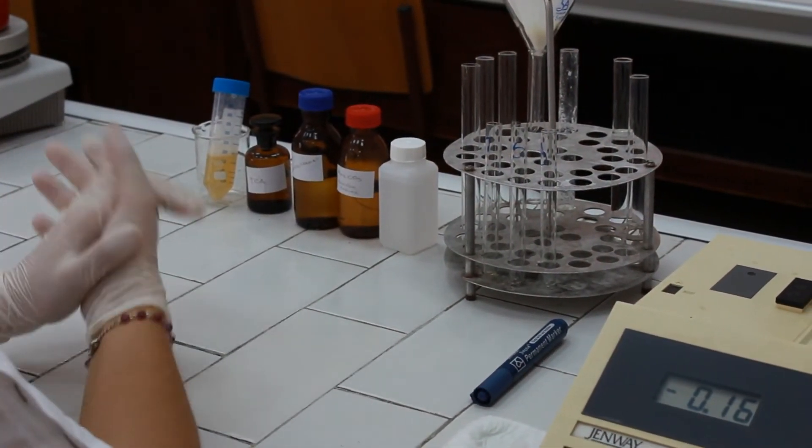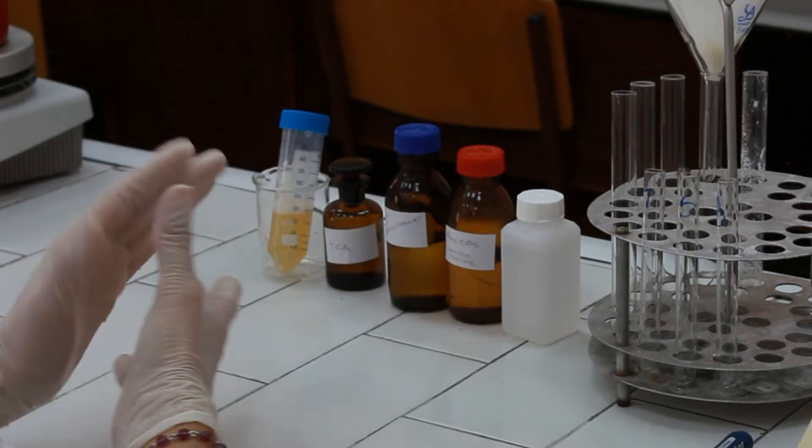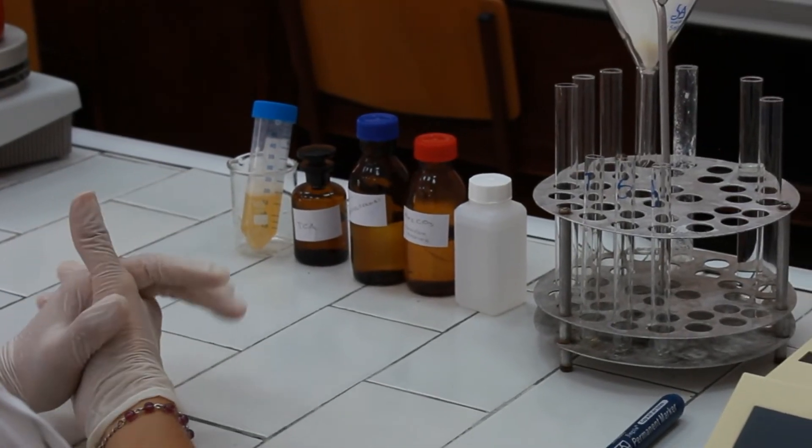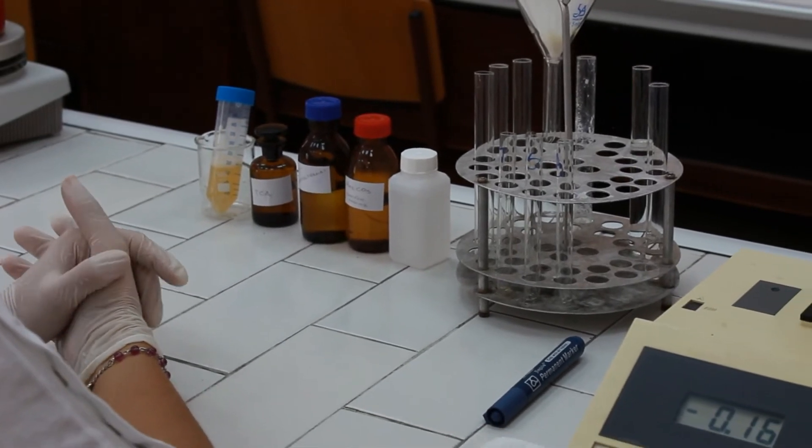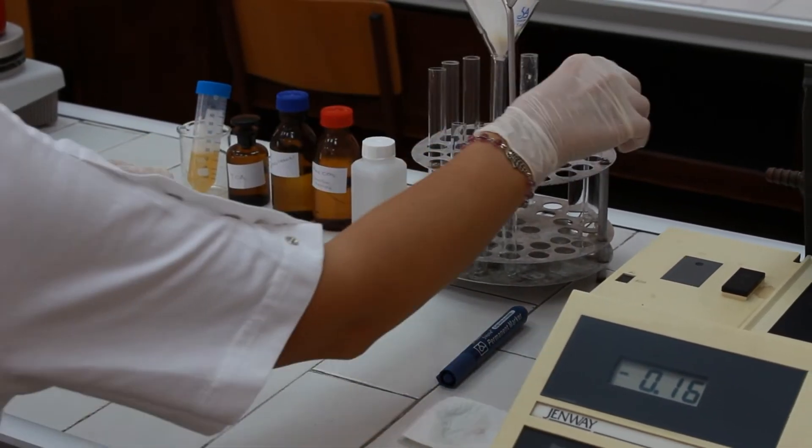Now we need to pipette the working reagent. We need to use the formulation of the reagent which is provided by the commercial producer of the kit. That is going to be 2.5 ml to each test tube.